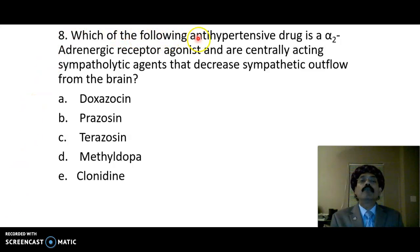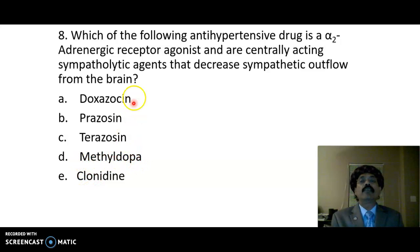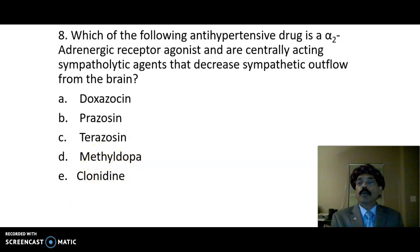Question 8: which antihypertensive drug is an alpha-2 adrenergic receptor agonist and a centrally acting sympatholytic agent that decreases sympathetic outflow from the brain? It is important to remember that this is not an antagonist but an agonist. The answer should be methyldopa.